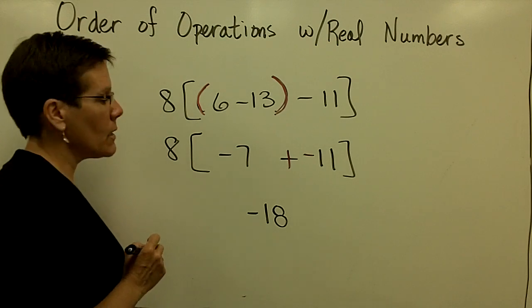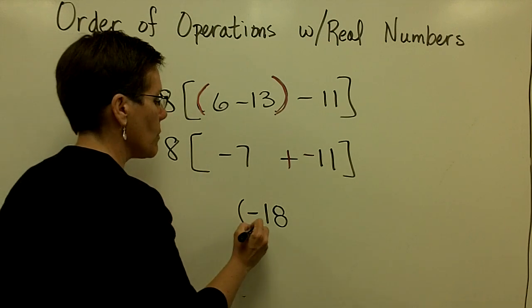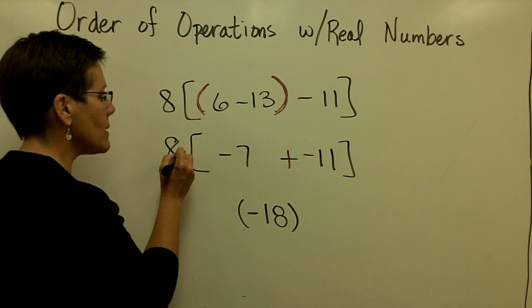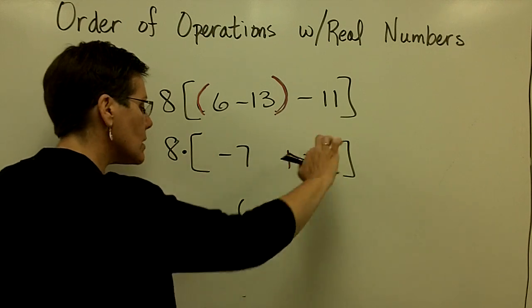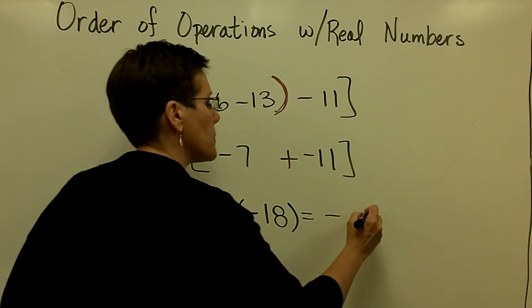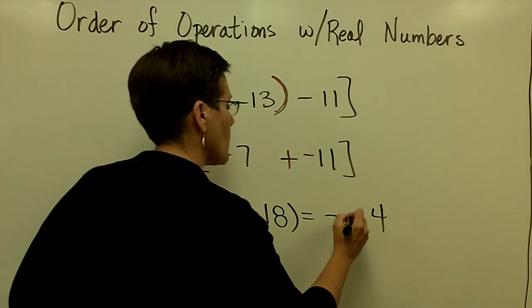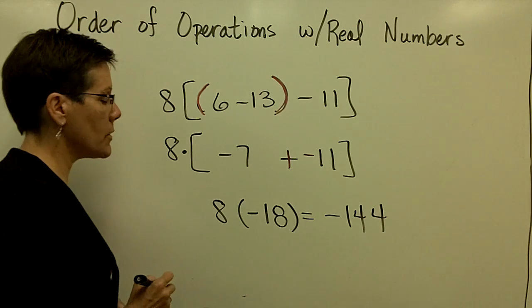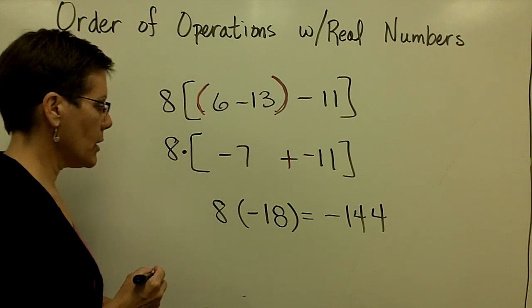I give that answer the negative sign. This square bracket can become a rounded bracket, because it's 8 times whatever's in there. So 8 times that negative number is a negative result. And I believe that answer is going to be 144, a negative 144.